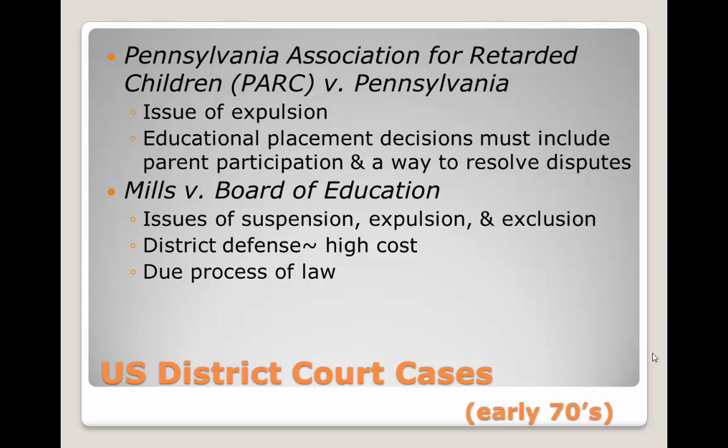The second case was Mills v. Board of Education. This case also dealt with suspension, expulsion, and exclusion of children with disabilities from the District of Columbia Public Schools. The school district primarily tried to use the defense that it was too costly to educate students with disabilities in the public school setting. The ruling was that the district failed to provide publicly supported education in their practice of expulsion, suspension, and exclusion of children with disabilities without affording them due process of law.